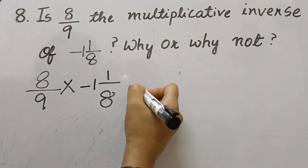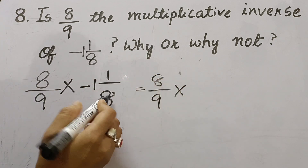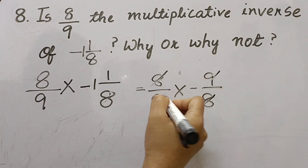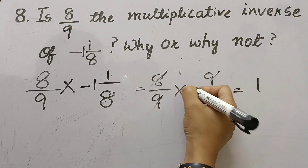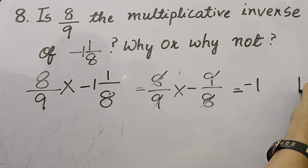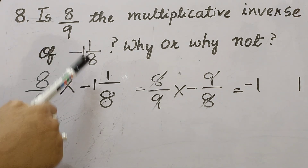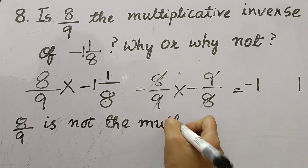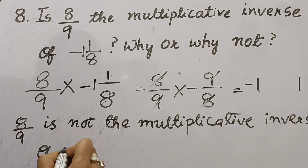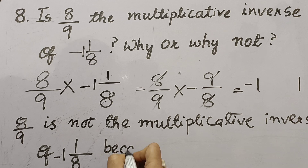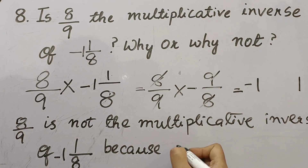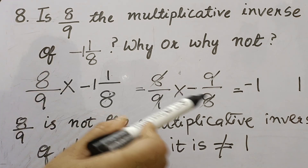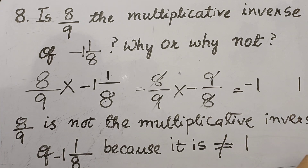We write 8/9 × (-9/8). Converting -1⅛ to an improper fraction gives -9/8. Multiplying: 8 and 8 cancel, 9 and 9 cancel, giving -1. The answer is -1, which is not equal to 1. Therefore, 8/9 is NOT the multiplicative inverse of -1⅛, because the product is not equal to 1.